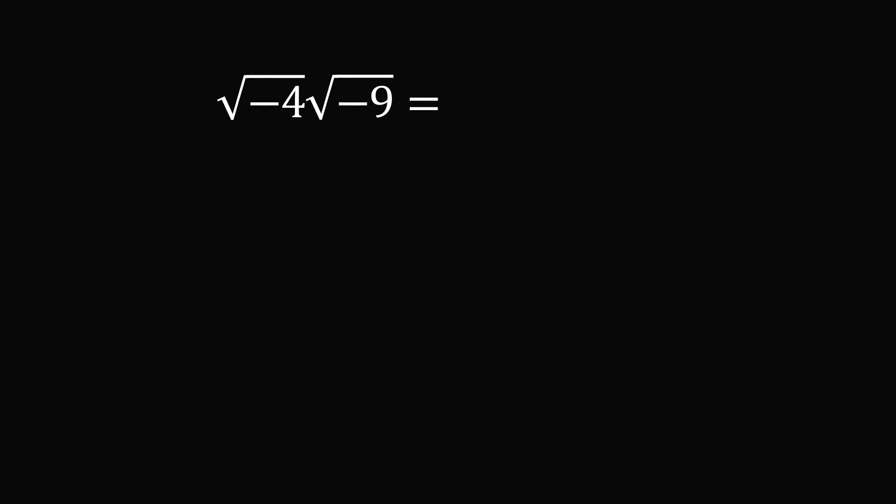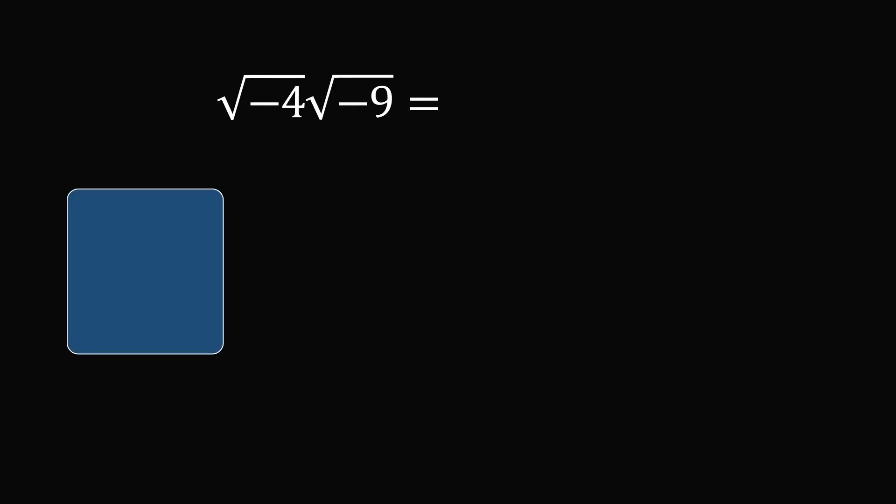There's a principle to evaluate the square root of a negative number. If x is greater than or equal to 0, we have the definition that √(-x) = i√x. Here i² = -1. So we have √(-4), which equals i√4. Then √(-9) equals i√9. The square root of 4 is 2, and the square root of 9 is 3. So we have 2i multiplied by 3i, which equals 6i², and i² equals -1, giving us the answer of negative 6. And I believe that's the correct answer to this question.